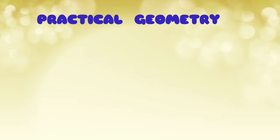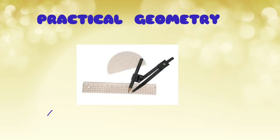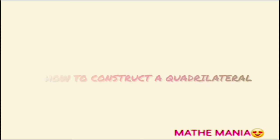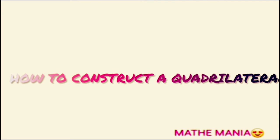For constructing a figure, we need our geometrical instruments: a scale, a pencil, a compass and a protractor. Are you ready with your instruments? Fine, then let us learn how to construct a quadrilateral.